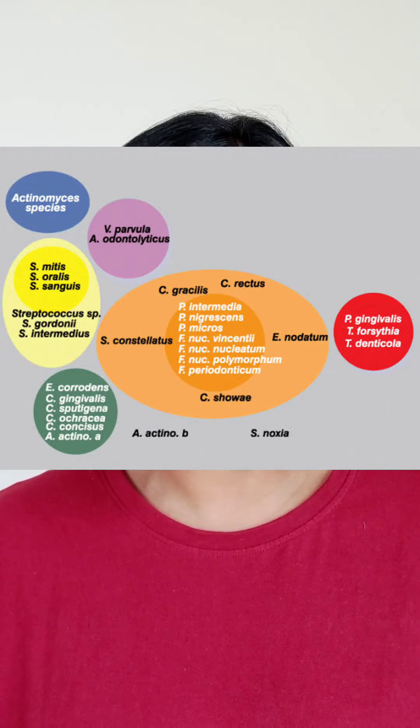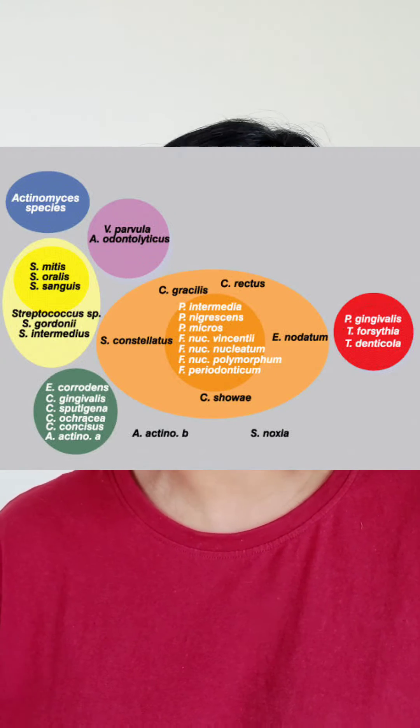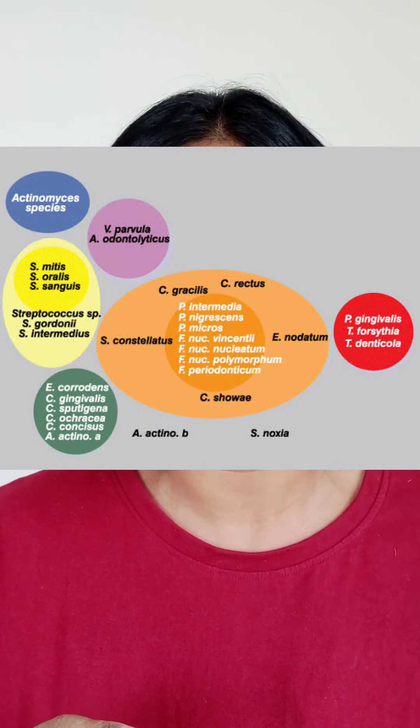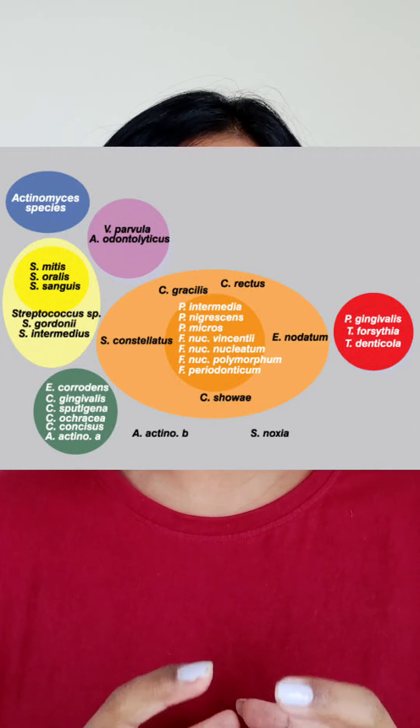The ones in the orange complex cause medium degree harm. But the ones in the red complex cause the most harm. In fact, these are present when we have bleeding gums.